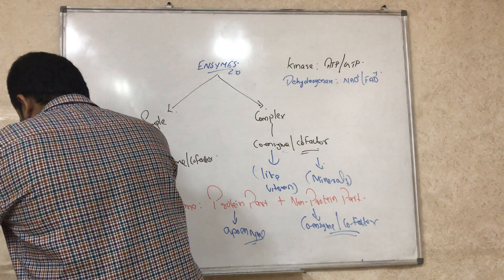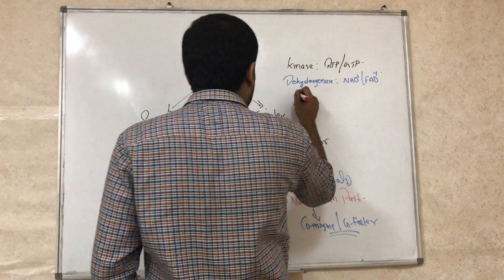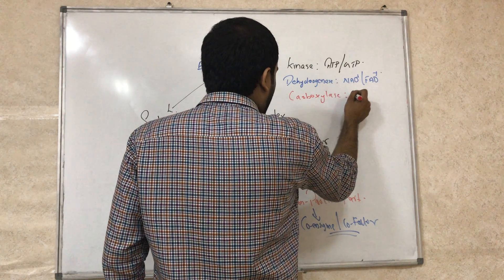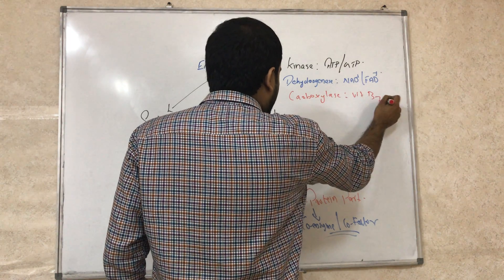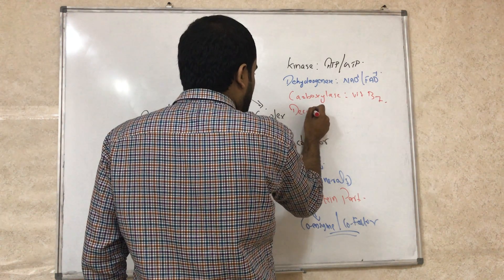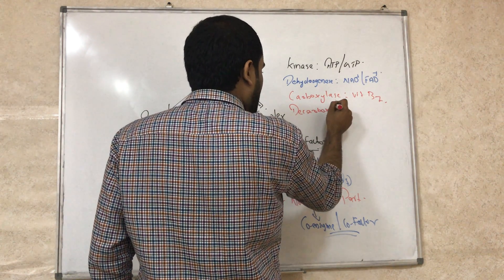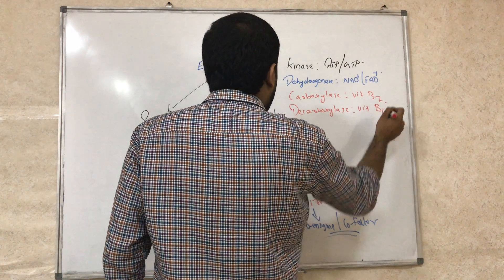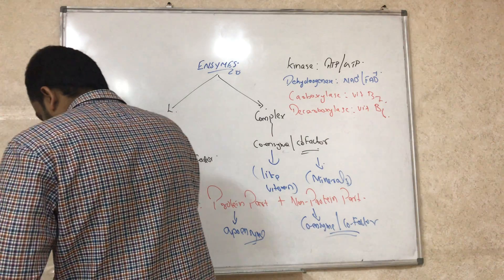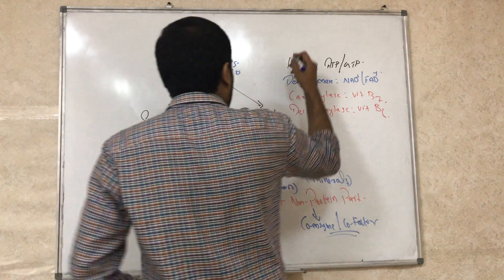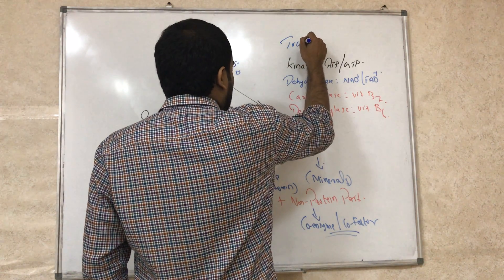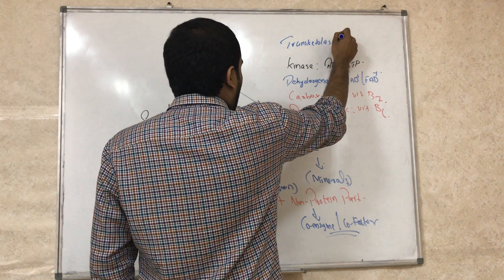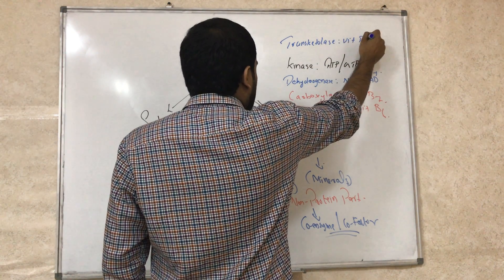For carboxylase, the coenzyme is vitamin B7. For decarboxylase, it is vitamin B6. For transketolase, the coenzyme is vitamin B1.